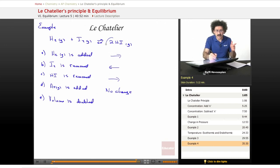But you have two moles of particles on the right and two moles on the left. There's no place for the reaction to go to offset the decrease in pressure, so there's no change.